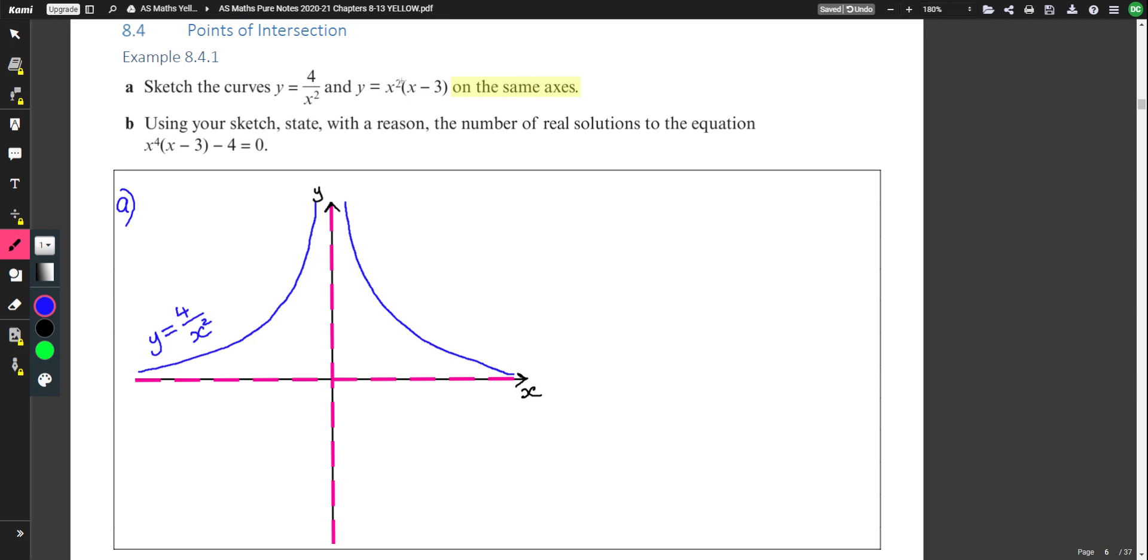Now the other one, if we expanded the brackets on this, we would get a cubic and the x cubed term would be positive. So think about the general shape of a positive cubic. The general shape is usually something like this. It doesn't have to have two turning points. Sometimes it will just have a point of inflection. So it would be one of those two shapes.